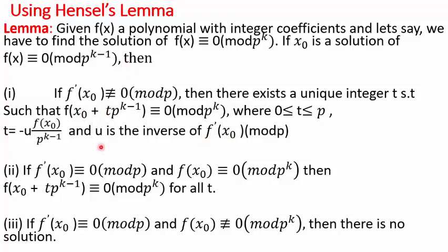We will see this in examples. The second case is when the derivative is congruent to 0 mod p, but f(x₀) ≡ 0 mod p^k. In such a case, x₀ + t·p^(k-1) is the solution for all t. The last case: our derivative is again ≡ 0 mod p, but f(x₀) ≢ 0 mod p^k. When it is not satisfying the original congruence, there will be no solution.